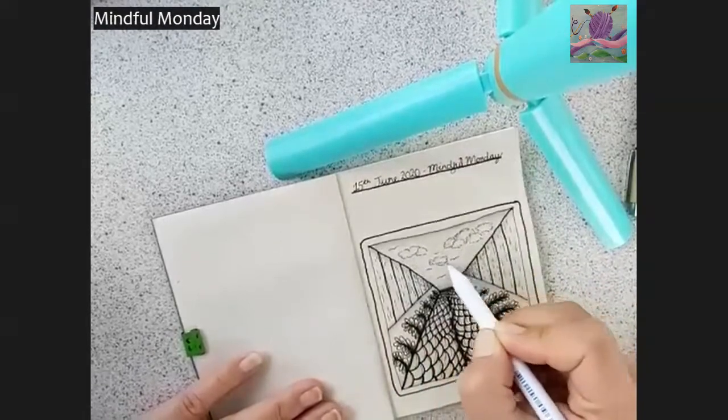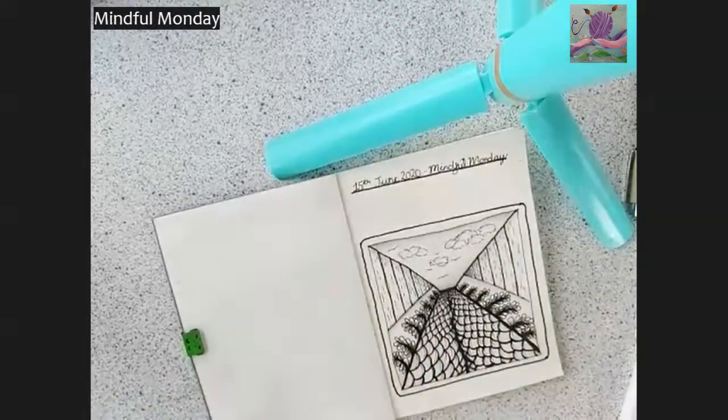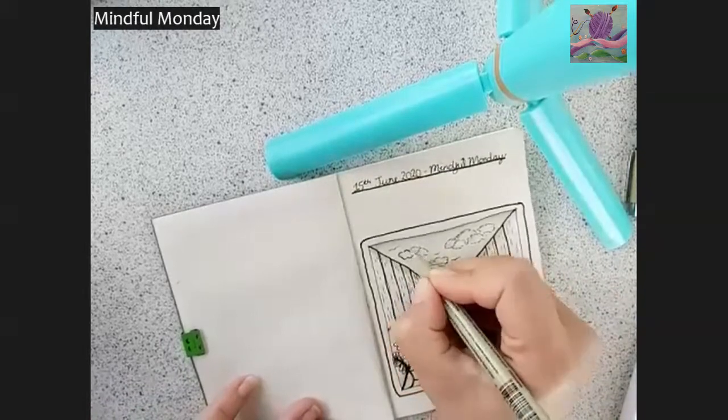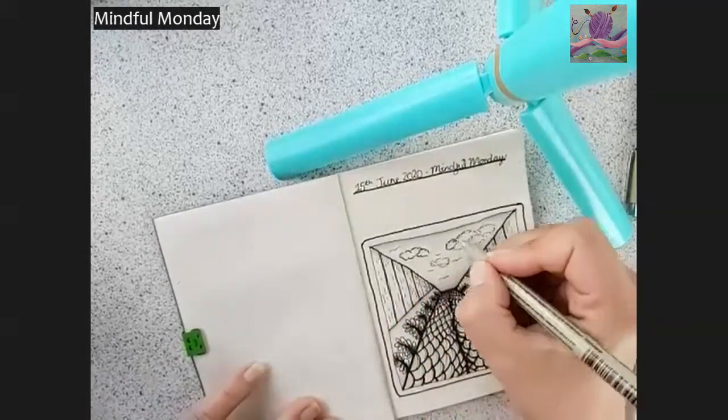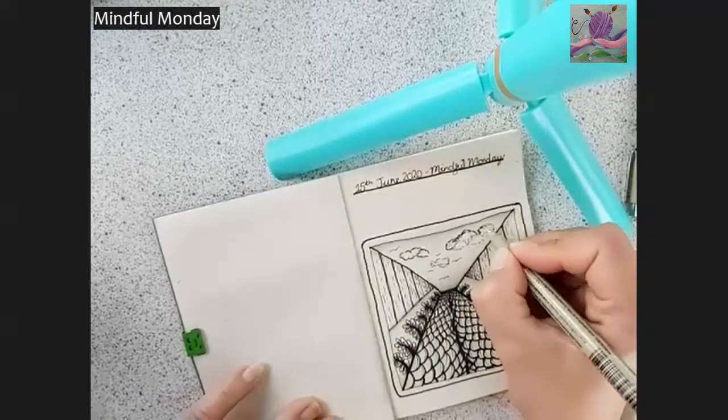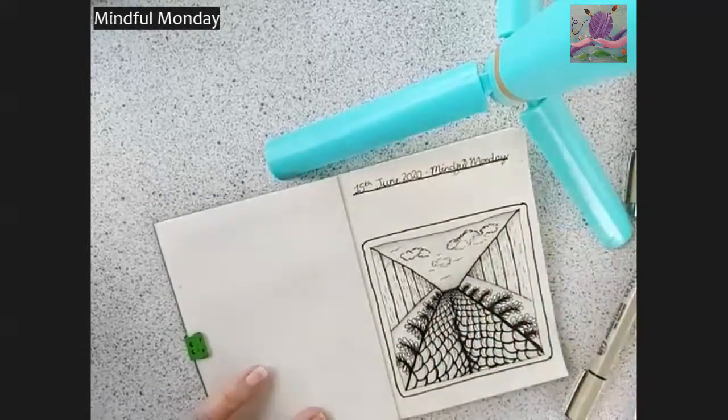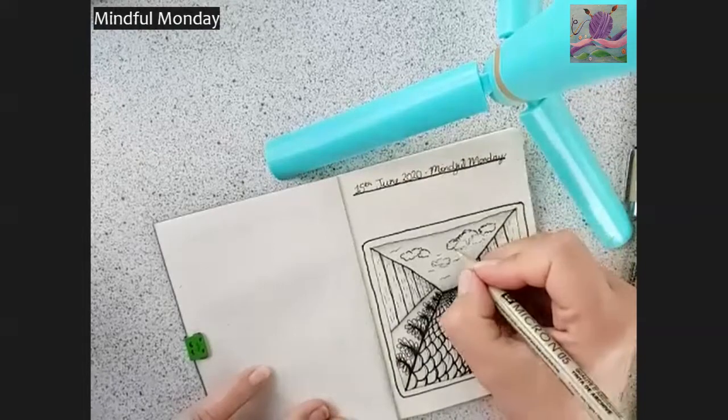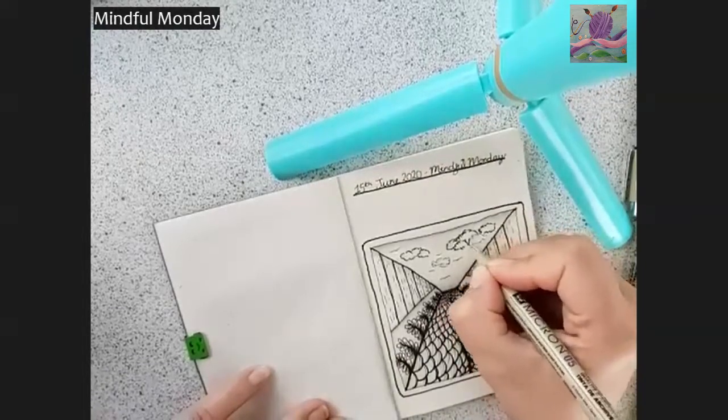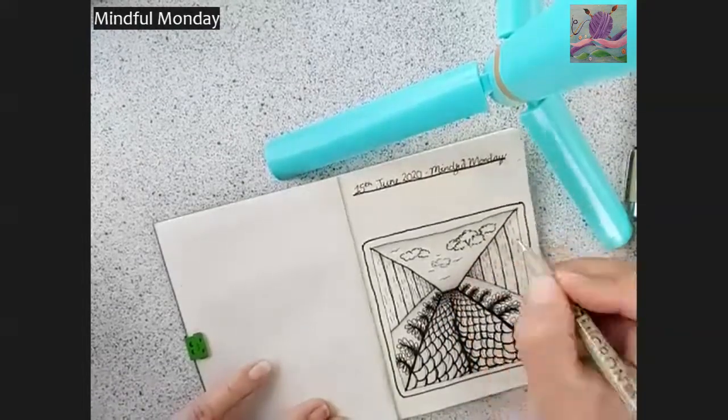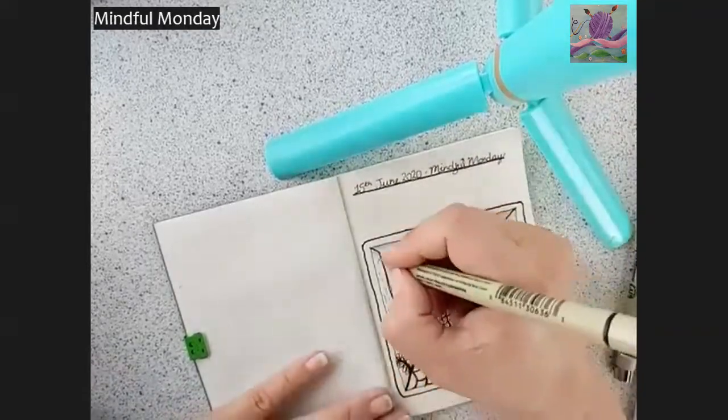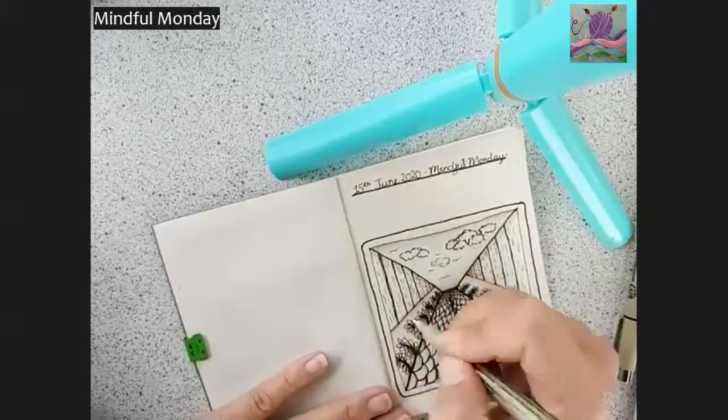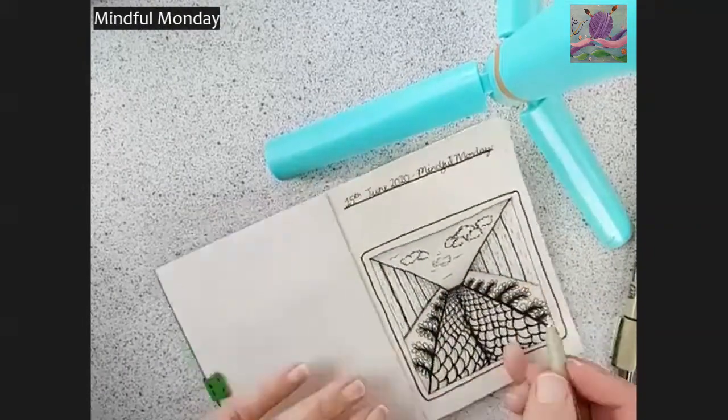Become conscious of your breathing again and become conscious of your body. And the chair that you are sitting in or perhaps the bed that you are lying on. Become aware of your body, your fingers, your toes. It's time to give them a little move. It's time to feel yourself again and come back.